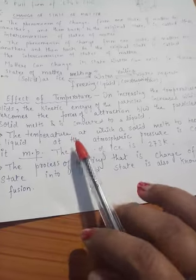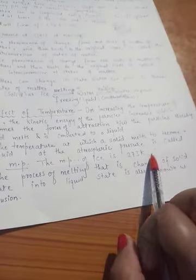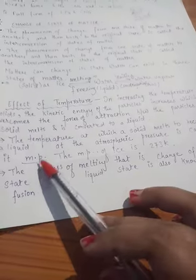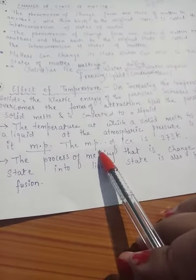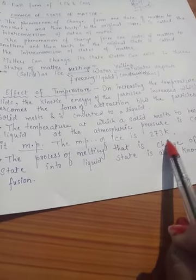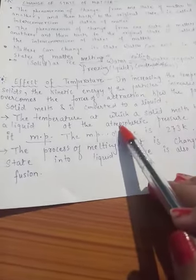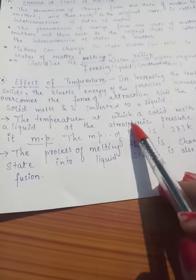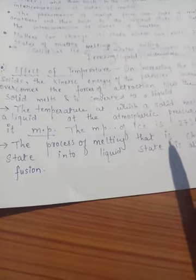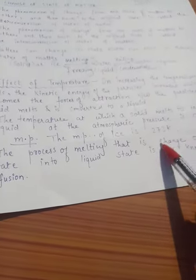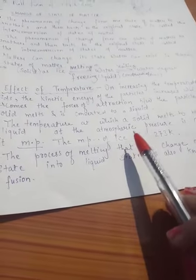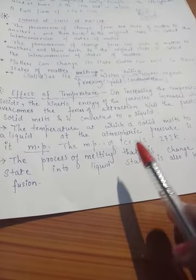The temperature at which a solid melts to become a liquid at atmospheric pressure is called the melting point. The melting point of ice is 273 Kelvin. Ice remains at 0 degrees Celsius, and when we convert it from 0 degrees Celsius, it comes to 273 Kelvin in the Kelvin scale.